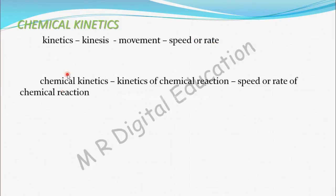Chemical kinetics means kinetics of chemical reactions. Kinetics means speed or rate, so speed or rate of chemical reaction. In this chapter, we are going to study at what speed or rate a chemical reaction is taking place.